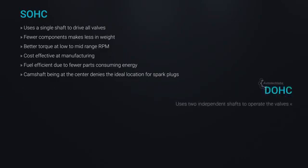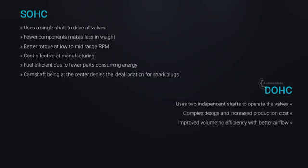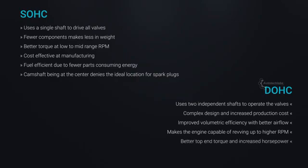DOHC uses two independent shafts to operate the valves, resulting in complex design and increased production cost. It offers improved volumetric efficiency with better airflow, making the engine capable of revving up to higher RPMs. DOHC provides better top-end torque and increased horsepower, and is capable of implementing efficiency-enhancing technologies like variable valve timing (VVT).